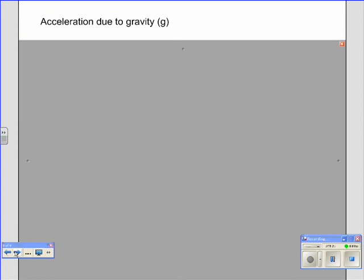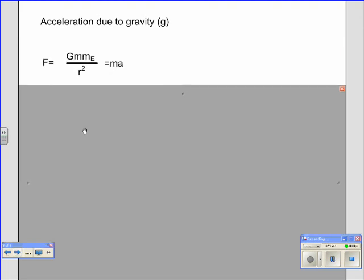Now, acceleration due to gravity. We've found that, right? We know that things accelerate at a certain rate. We've measured how fast things fall. How else can we do it? Well, by using Newton's law of universal gravitation. If F, the gravitational force, is equal to Gm, mass of the Earth, over r squared. That's the universal gravitation. It's also equal to the force pulling down on something. It's weight.